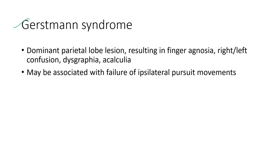Next is Gerstmann syndrome. It is a dominant parietal lobe lesion resulting in finger agnosia, right-left confusion, dysgraphia, and acalculia. It may be associated with failure of ipsilateral perceived movements.